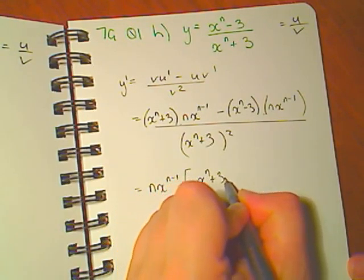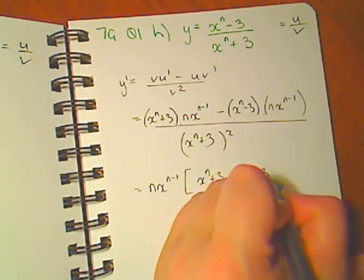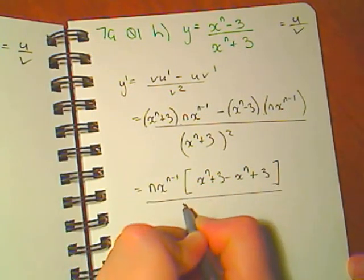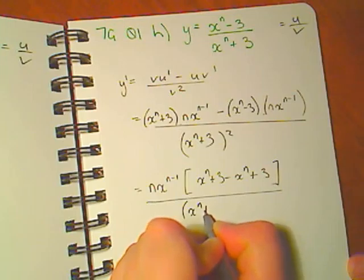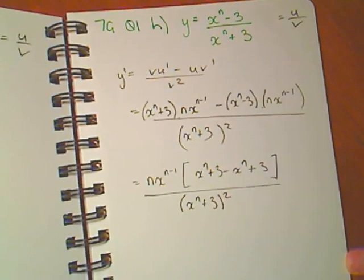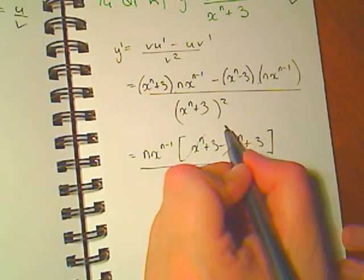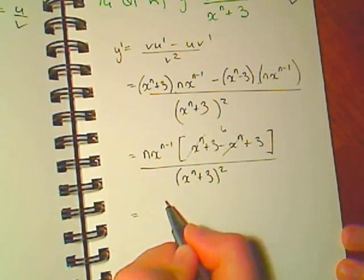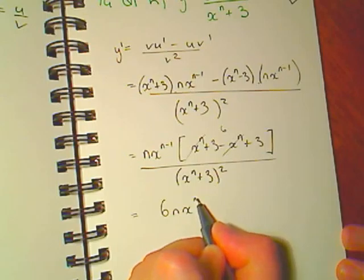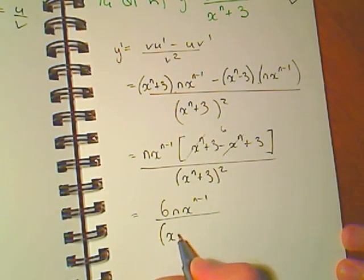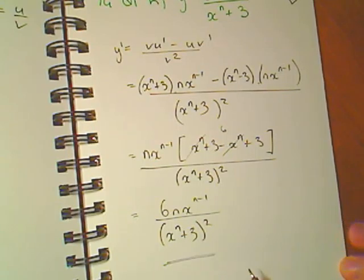Common factor. x to the n minus x to the n. 3 plus 3 is 6. Turn that out the front. That's our derivative.